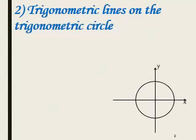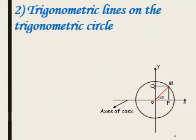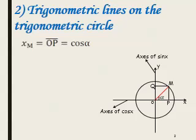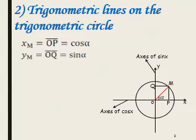Now we are going to learn the trigonometric lines on the trigonometric circle. Suppose we have a point M on the circle that makes an angle alpha with the axis of abscissa. The orthogonal projection of M on the x-axis is P, and the orthogonal projection of M on the y-axis is Q. Always remember that the axis of abscissa is the axis of cosine, and the axis of ordinate is the axis of sine. So the x-component of M is equal to cosine alpha, and the y-component of M is equal to sine alpha.